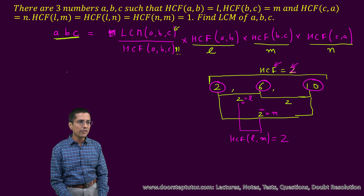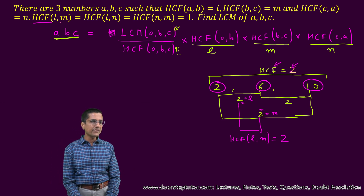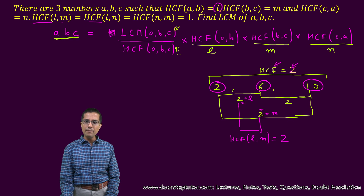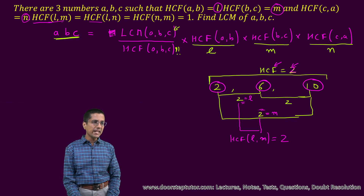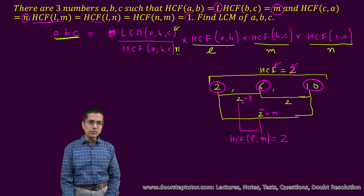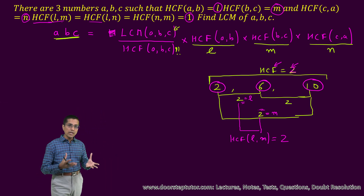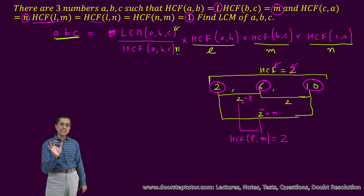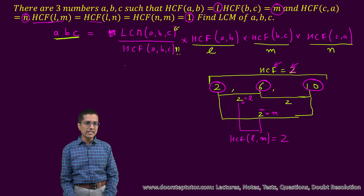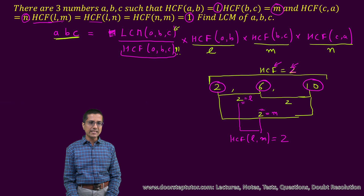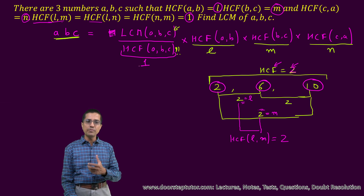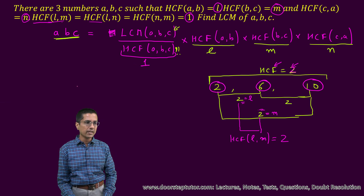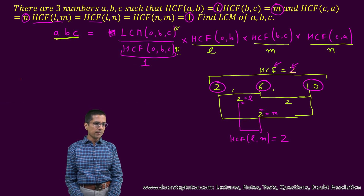Here, however, we have been told that L, M and N are the pairwise SCFs of the three numbers, and if we take their SCF it comes out to be 1. This means there is no common factor between A, B and C, which tells us that the SCF of ABC has to be equal to 1. So our problem is made simple.